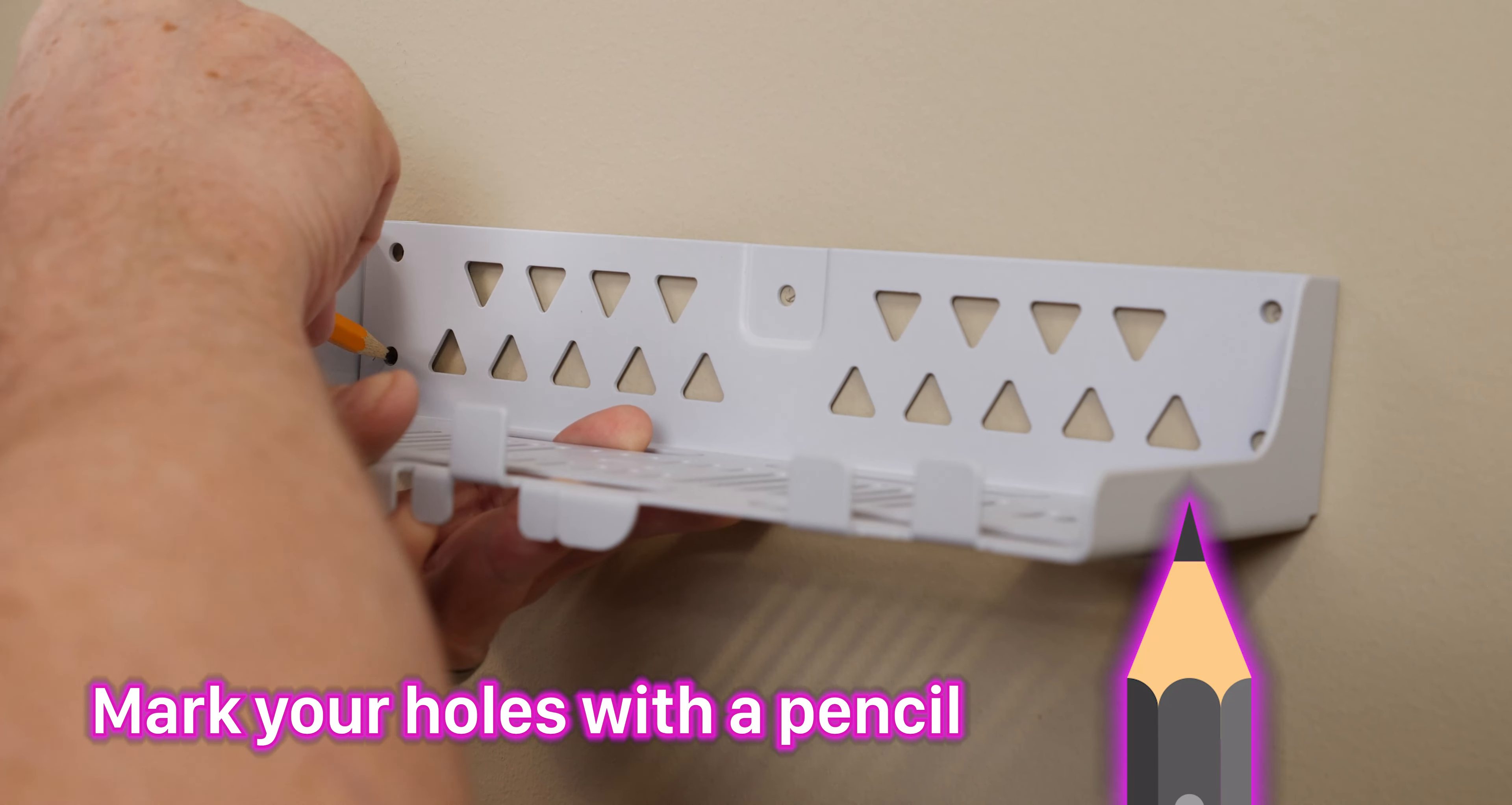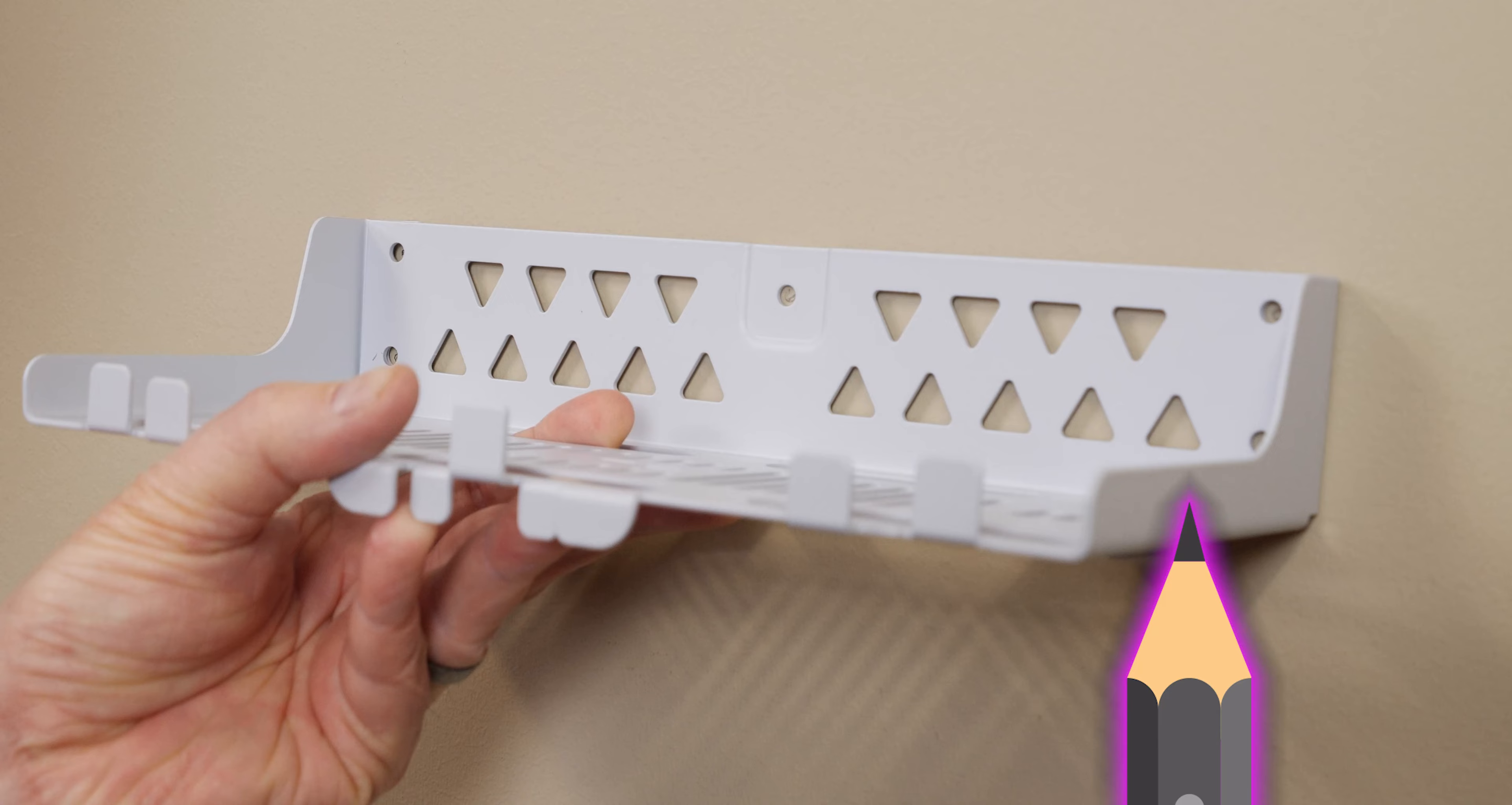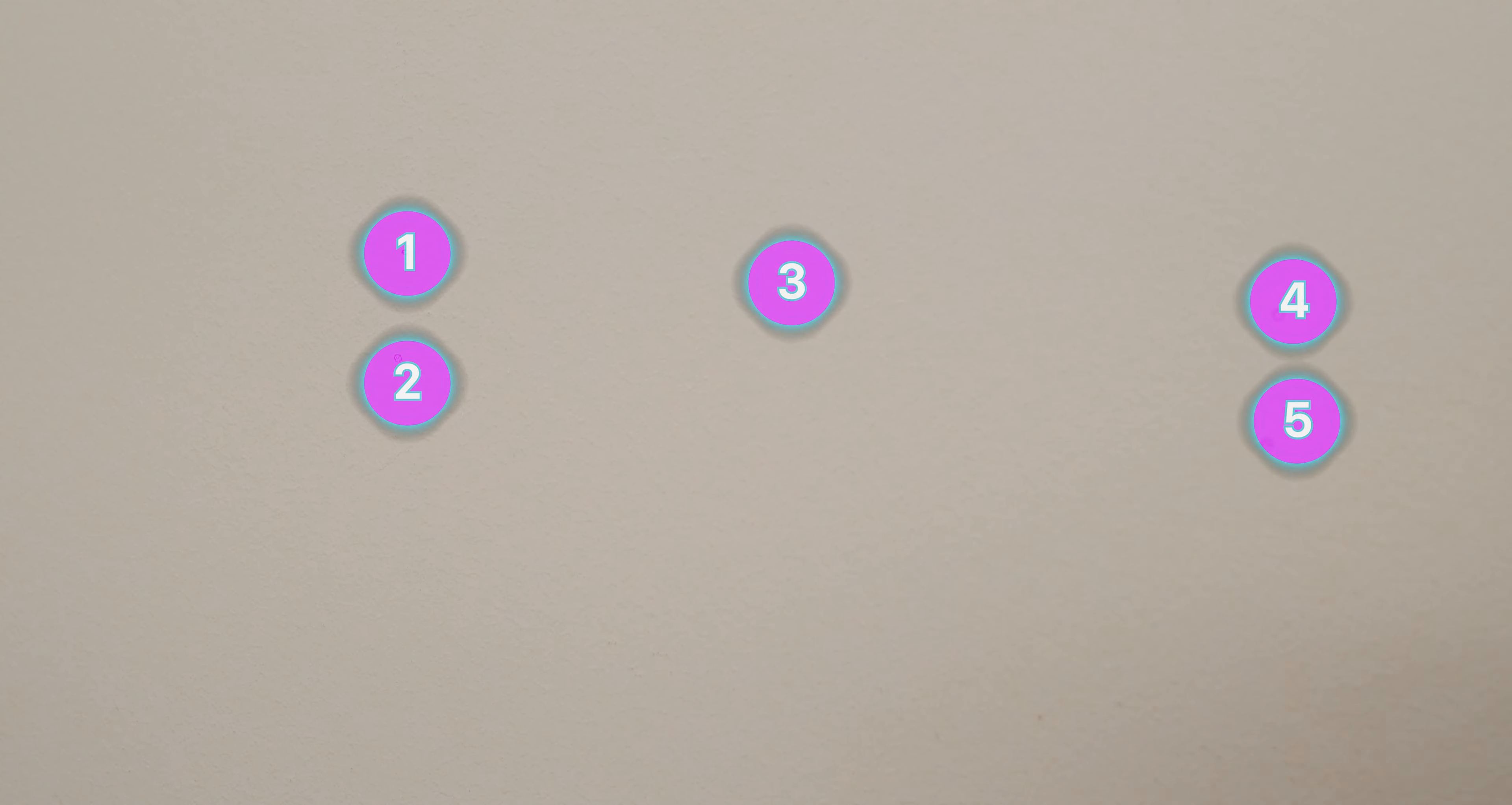After lining up and marking the locations where you will be drilling, drill the five holes where the mounting screws and anchors will go.